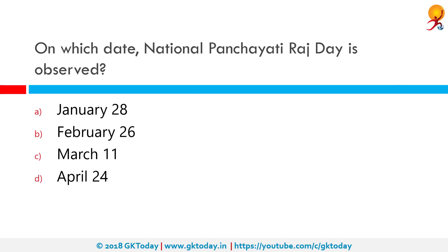On which date is National Panchayati Raj Day observed? In India, April 24th is celebrated as National Panchayati Raj Divas every year. This day marks the passing of the Constitution's 73rd Amendment Act that came into force with effect from 24th April 1993.